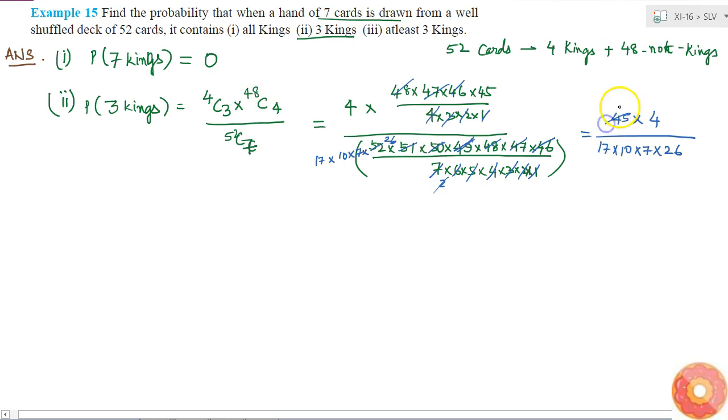I know 45 is 9 times 5, and 10 is 2 times 5, and 2 twos are 4, and 2 thirteens are 26. So this is simply equal to 9 by 17 times 7 times 13. This is the probability of getting 3 kings.